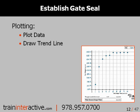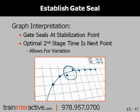When plotting data, you should generate a curved trend line to approximate the behavior of the polymer. A trend line does not pass through every data point but resembles the data that has been plotted. When interpreting the data, the two points on either side of the data stabilization is the time of gate seal. In this example, the gate seals between five and six seconds. As a result, seven seconds is chosen for the optimal second stage time. This will ensure that the gate is properly sealed when material variations occur, but material and energy is not wasted by excessive packing.